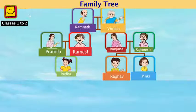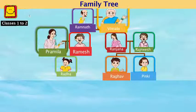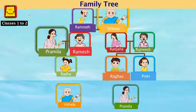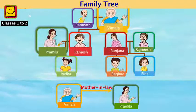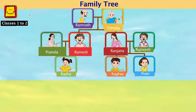This is Vimla and this is Pramila. Vimla is Radha's paternal grandmother and Pramila is Radha's mother. Then what's the relation between Vimla and Pramila? This is very easy — what is the relation between your paternal grandmother and your mother? Vimla is Pramila's mother-in-law and Pramila is Vimla's daughter-in-law.